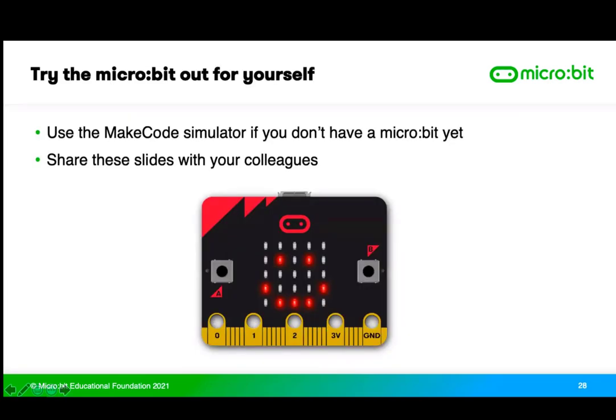Just to reiterate: if you're using the MakeCode block editor, it has a simulator built in — great for trying things out even if you haven't got a micro:bit to hand. Pretty much all of the Make it Code it short projects work really well in the simulator, which simulates many physical features of the device: shaking, temperature changes, even the compass. You can test everything in the simulator before flashing it onto a real micro:bit. Hopefully we can share these slides with you so you can share them with colleagues, whatever subjects they're teaching.